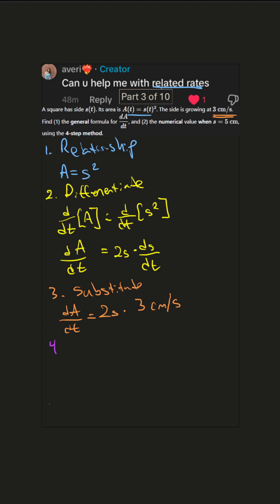Step four: solve for any unknowns. So dA/dt, which is the change in area, is just 6S — six S centimeters squared per second, because we're dealing with area. And that's it for number one. That's the general formula for the instantaneous change in area.